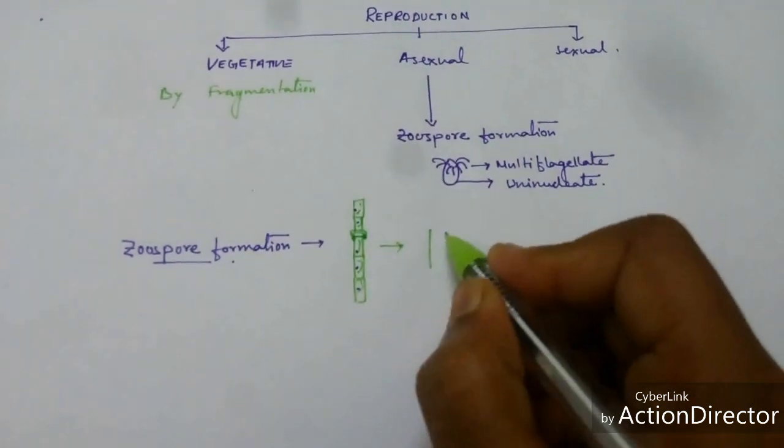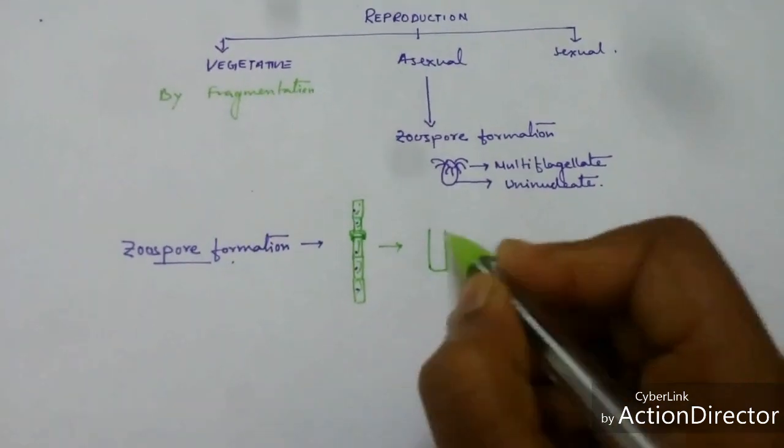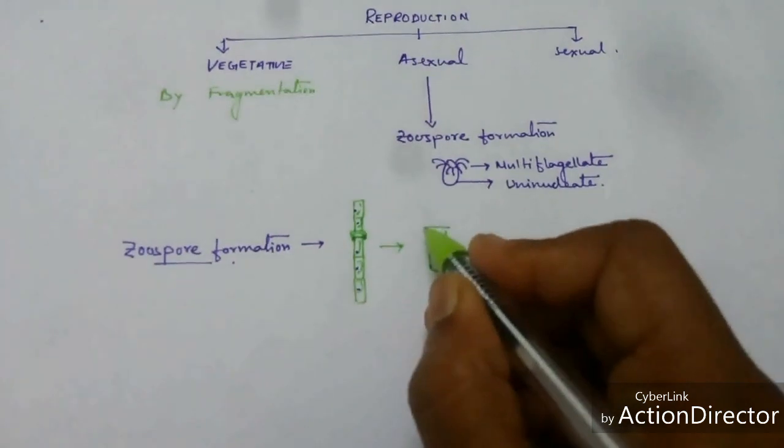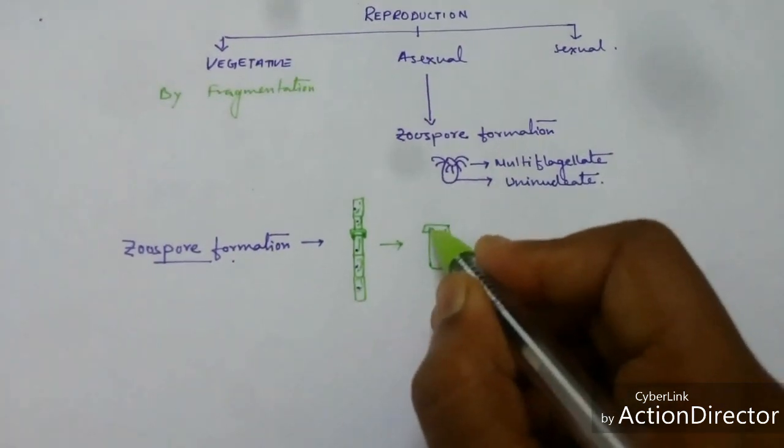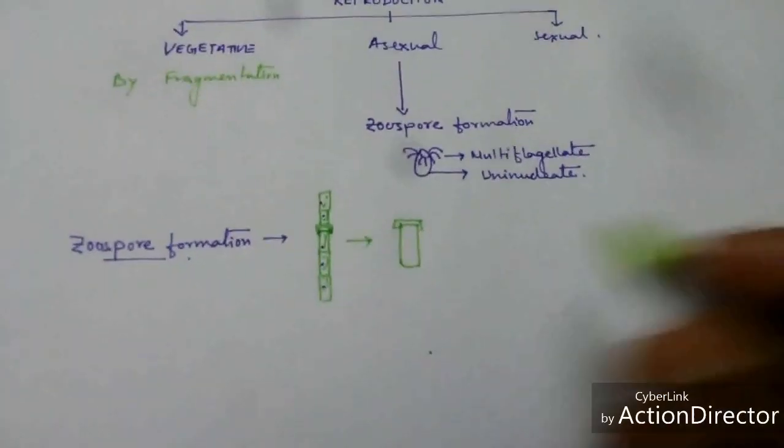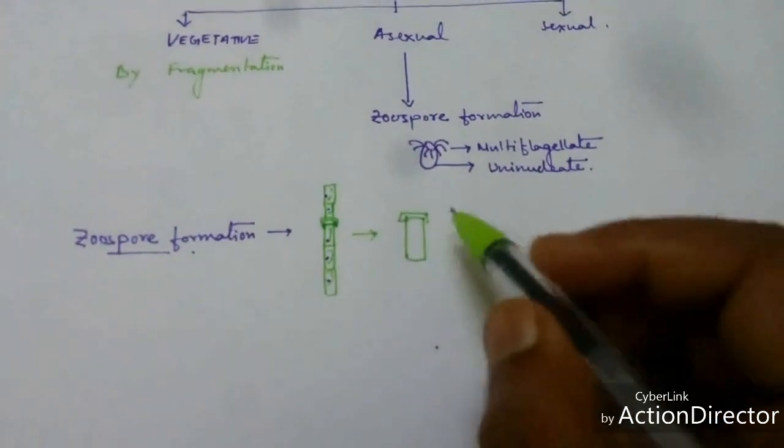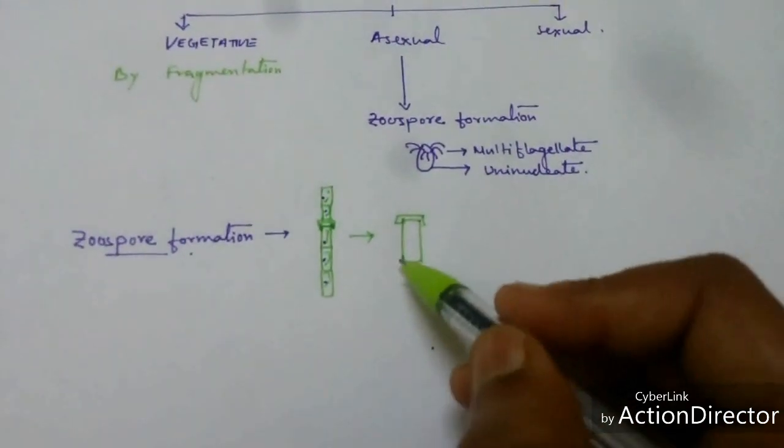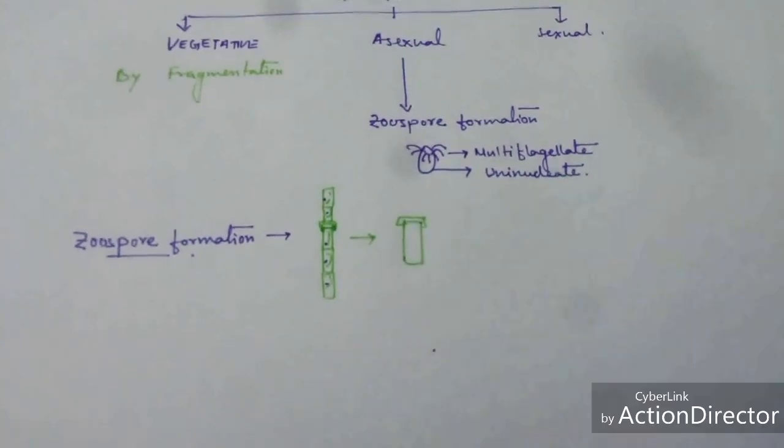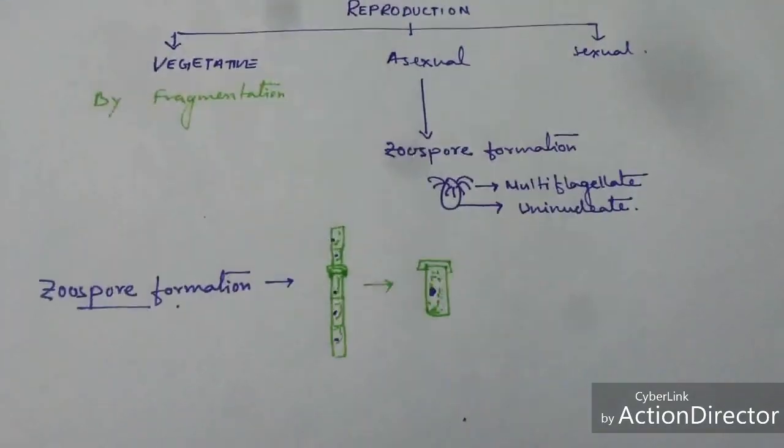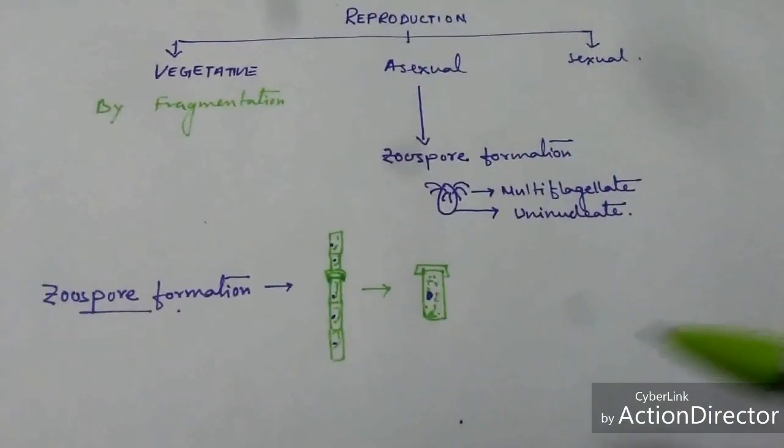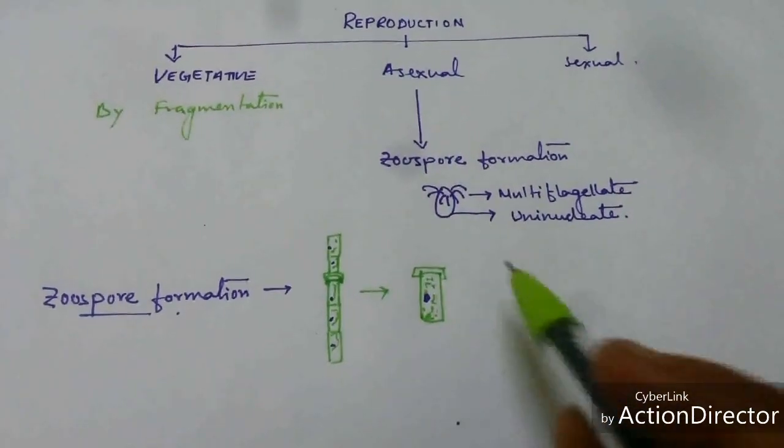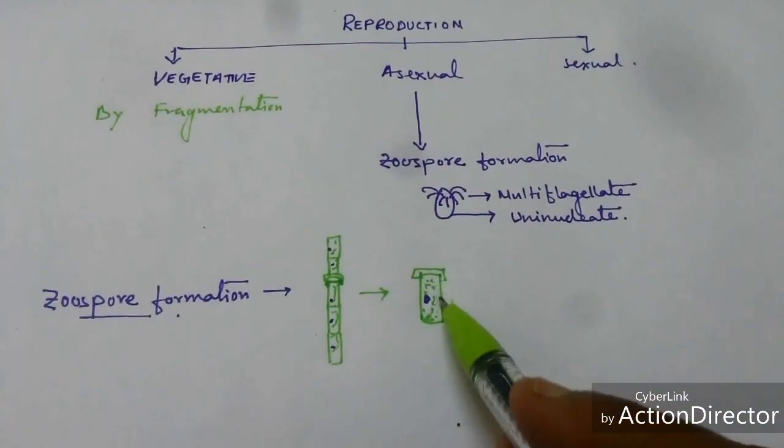During zoospore formation, the lowermost capsule helps to form a zoospore and this is called a zoosporangium. So it is an Oedogonium cell and contains chloroplast with protoplasm with nucleus, and it's transformed into a zoosporangium to form zoospores.